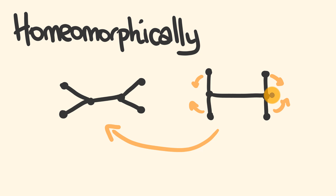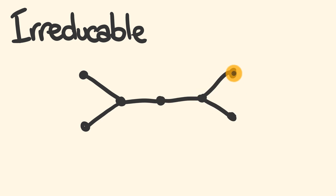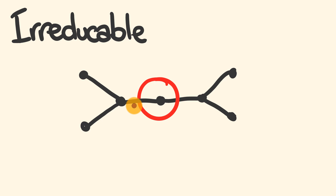So to recap: we need N equals 10 dots, trees without cycles, and they must be unique. Now the final condition: the trees have to be irreducible. This means we're not allowed to have a situation where only two lines go into a dot — one going in and one going out. That node adds nothing, so our trees are not allowed to have that particular situation.